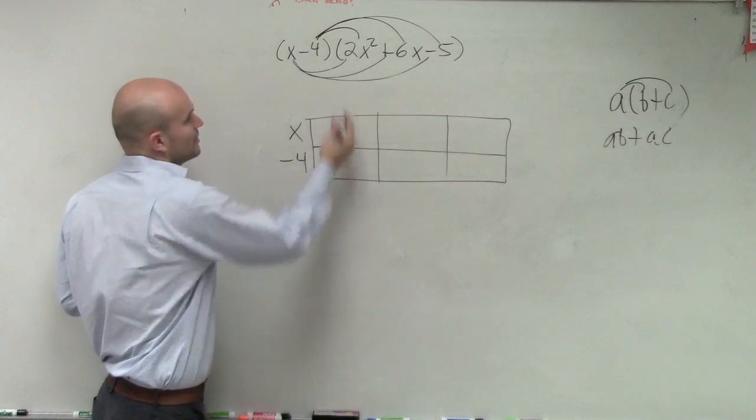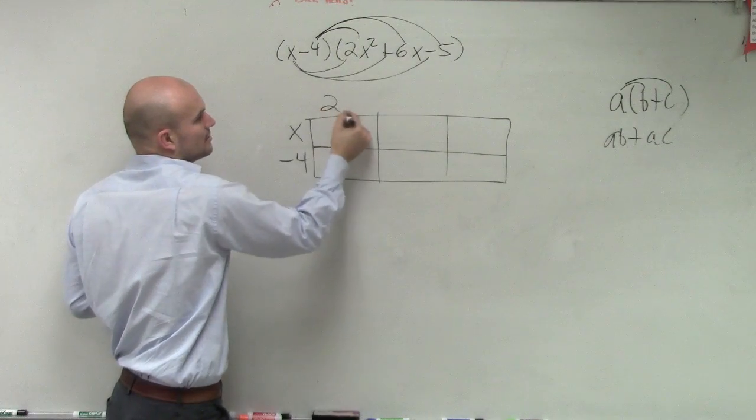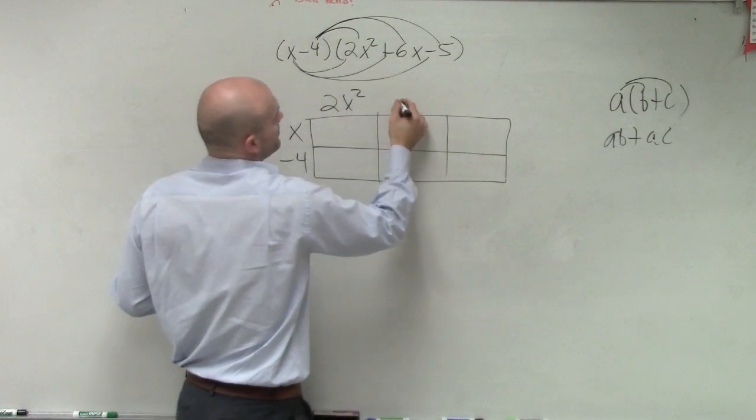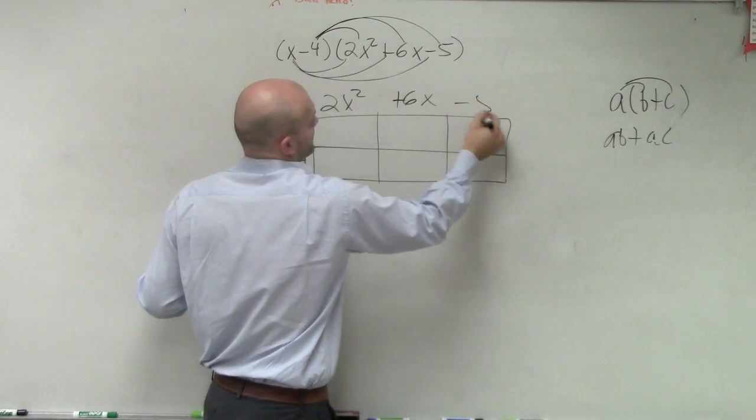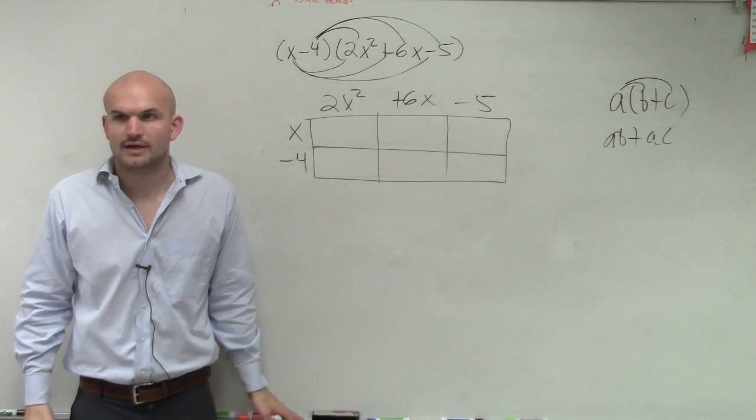So you're going to have x minus 4. You write one side, the x here, then you write the other polynomial up here. Does everybody see what I did? Okay, now remember, when you're multiplying,